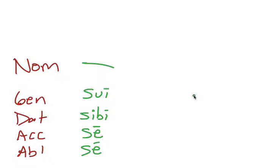Just like if you think of tui, tibi, te, te — or mei, mihi, mei. So this is the third person version of those pronouns, but it's only reflexive, meaning it refers back to the subject.